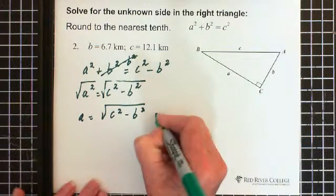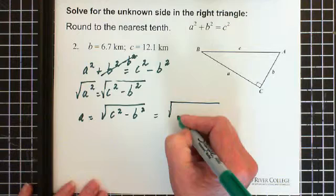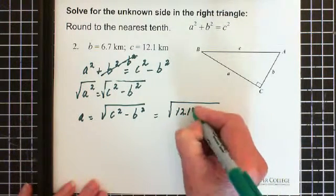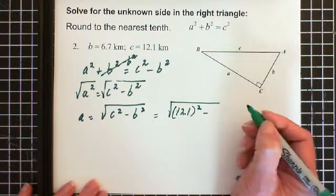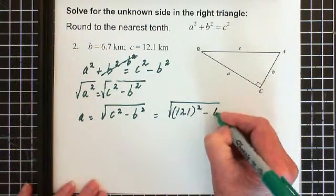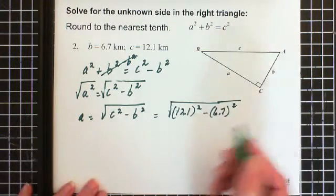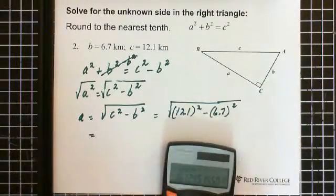Now I plug in the numbers. I have the square root of 12 - you don't actually have to put in the kilometers. So 12.1² minus b, which is 6.7².